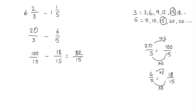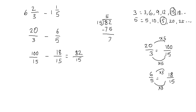In this fraction, the numerator is greater than the denominator, so we cannot leave our final answer in this improper fraction form. We have to convert it into a mixed fraction. To do that, I'll use the long division method: 82 divided by 15. 15 goes into 82 five times — 15 times 5 is 75 — and 82 minus 75 gives a remainder of 7.